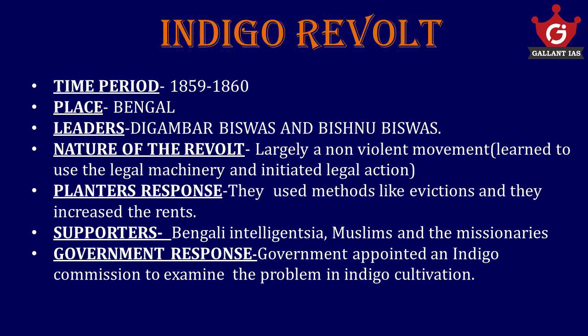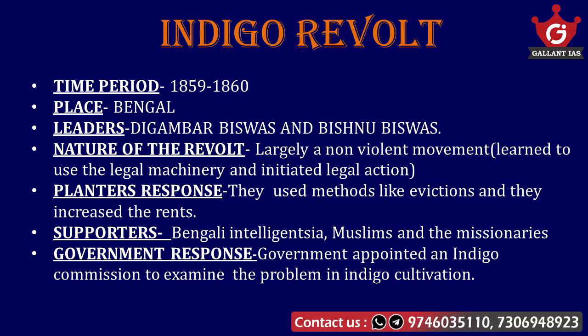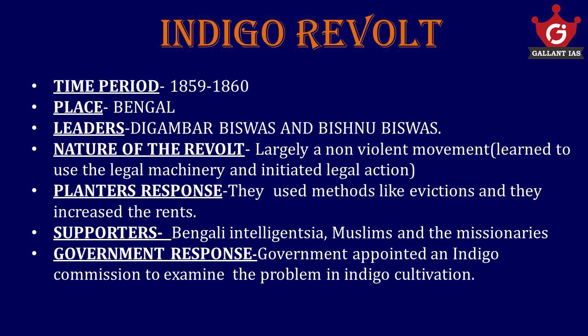The background of this revolt is that in Bengal, the indigo planters — nearly all Europeans — exploited the local peasants and forced them to grow indigo on their lands. The planters forced the peasants to take advances and enter into contracts which were harmful to them. The farmers were brutally oppressed if they could not pay the rent. So the peasants started their revolt against this exploitation in 1859.